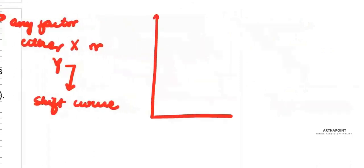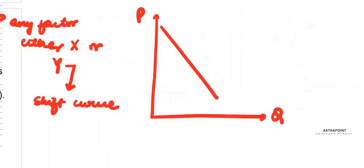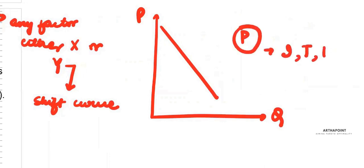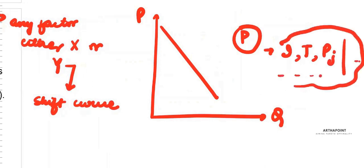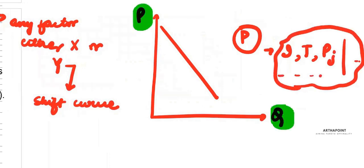When I plotted this demand curve, I plotted it between Q and P. So any other factor — anything other than the price of the commodity — like income of the individual, taste and preferences, price of other commodities, etc., any factor which is neither on the x nor the y-axis will always lead to a shift of the curve.